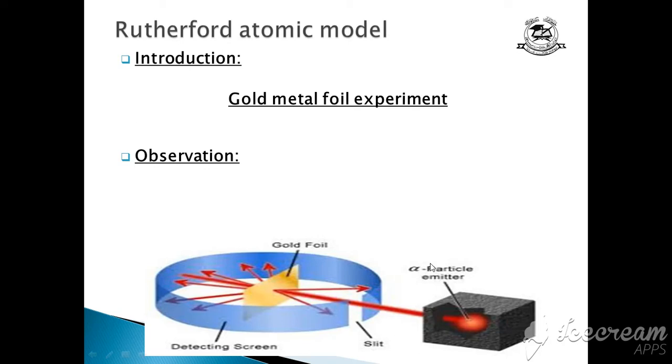They are having two protons. They are going to the gold metal foil. So what happened when we study this atomic model?